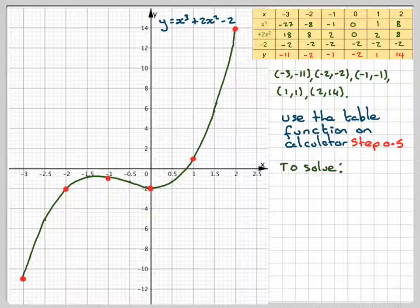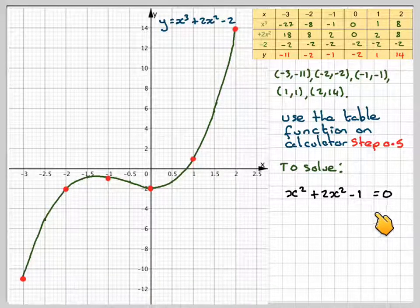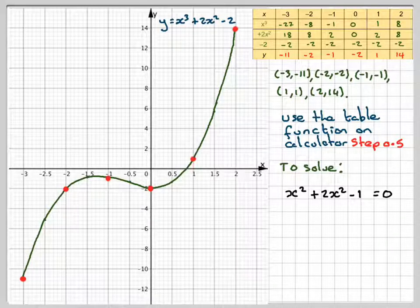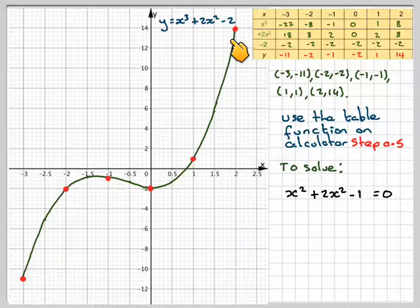Right, to solve, we had to solve this equation. x cubed plus 2x squared minus 1 is equal to 0.